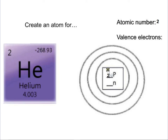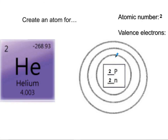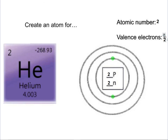You put two protons, two neutrons, and then fill in your electron levels. So you would have two in the first energy level, which means that you would have two valence electrons. The valence electrons are the number of electrons on the outside, so you don't have any in the third energy level, you don't have any in the second — your only electrons are in the first, and you only have two.